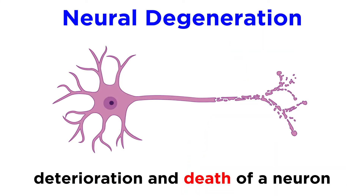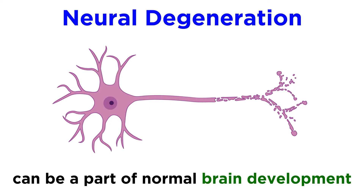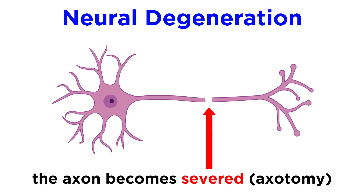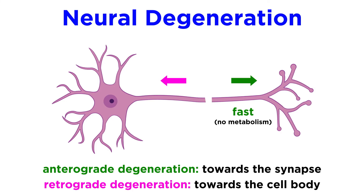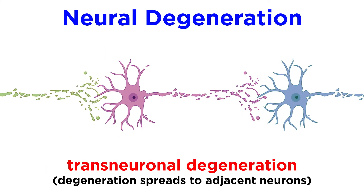Beginning with neural degeneration, this is the deterioration and death of a neuron. While this can be a symptom of disease, it can also be employed in normal brain development. When an axon is severed, this is called axotomy. As a result, there will be anterograde degeneration, which is deterioration of the remaining portion that extends towards the synapse. This is quite fast, as this section of the axon is now cut off from the cell body, so metabolism is impossible. There will also be retrograde deterioration, involving deterioration in the other direction towards the cell body, which takes a bit longer, though it can be aided by apoptosis. Sometimes this effect can spread to adjacent neurons, and this is called transneuronal degeneration.